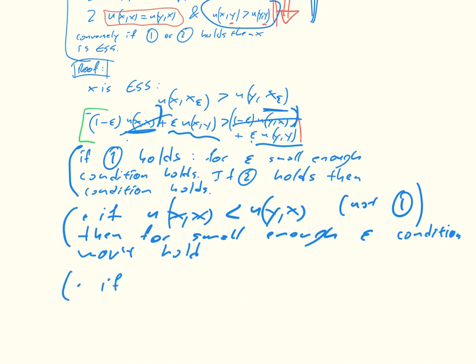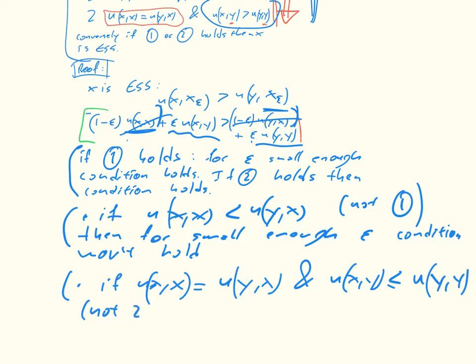But then likewise, if u of x,x is equal to u of y,x, and u of x,y is less than or equal to u of y,y, so this is not 2, not the second condition, then the equation doesn't hold. Condition doesn't hold. Okay, so just looking at this, we see that if actually those two things are equal, but what we're left with is specifically a condition that doesn't hold. So that's the proof.